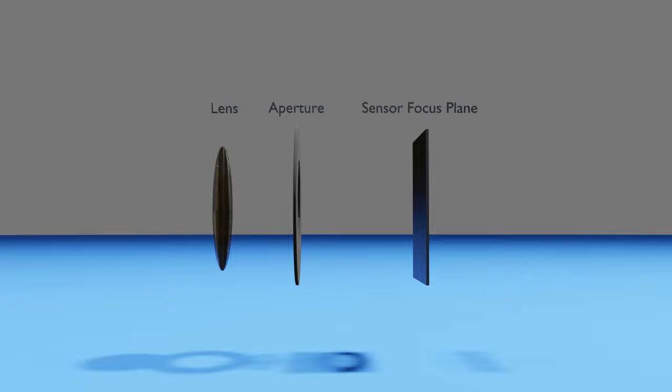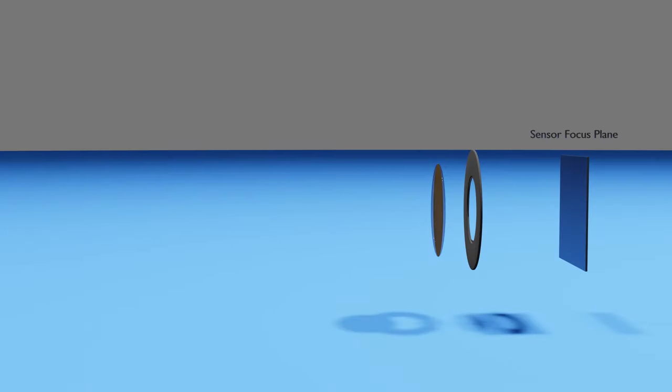Let's look at a demonstration of why this is. For this demonstration, we will have the sensor which reads the light that hits it, the aperture, the lens which bends light rays into a focal point, and our subject. First starting with the bottle opener.